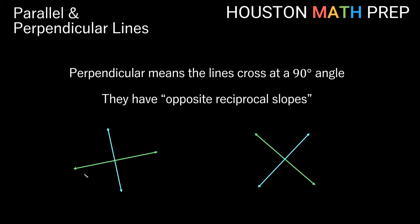For instance, if one line had a slope of positive one fourth, then the perpendicular line would have the opposite sign — so negative — and the reciprocal of one over four, which would be four over one, giving us negative four. So we have two things to change when determining a perpendicular slope: we need to change the sign and we need to take the reciprocal of the original slope.